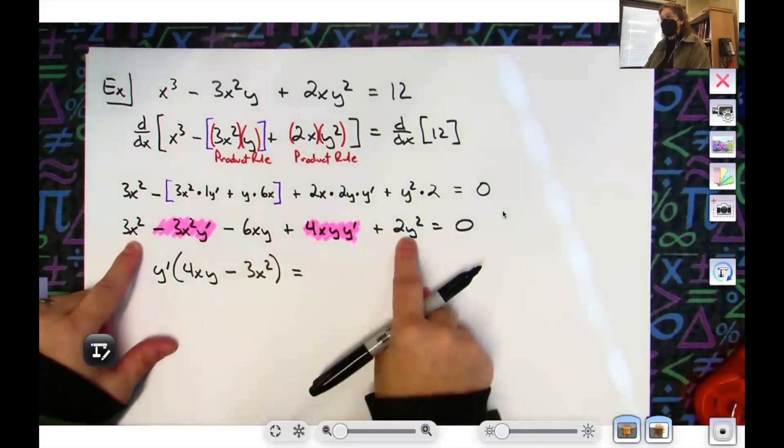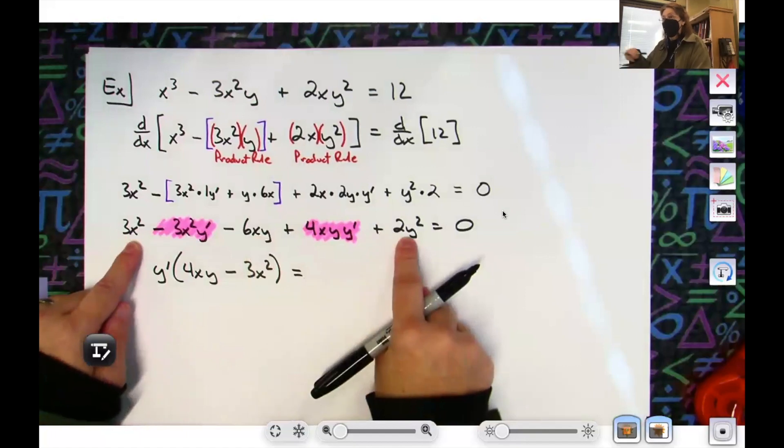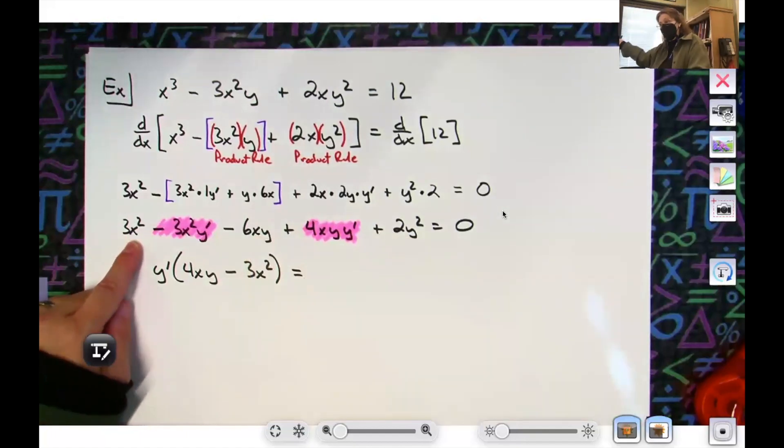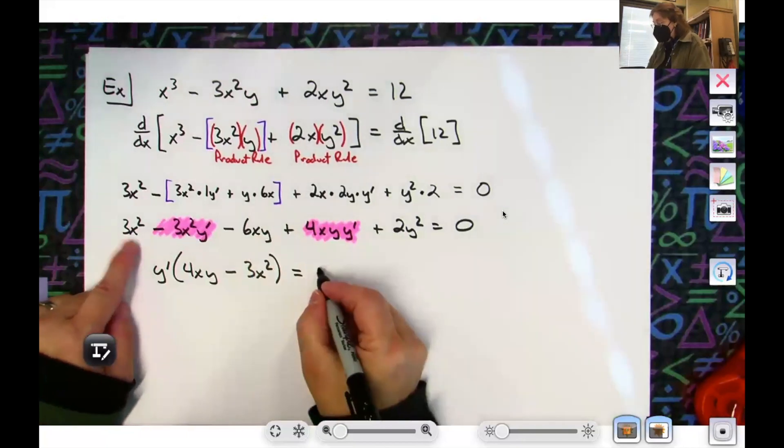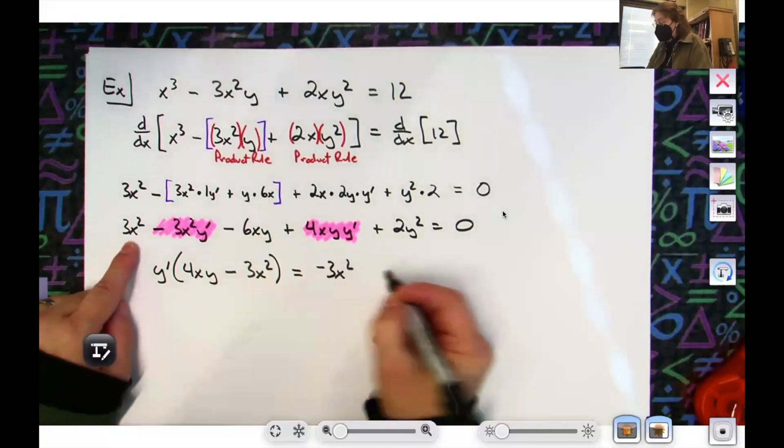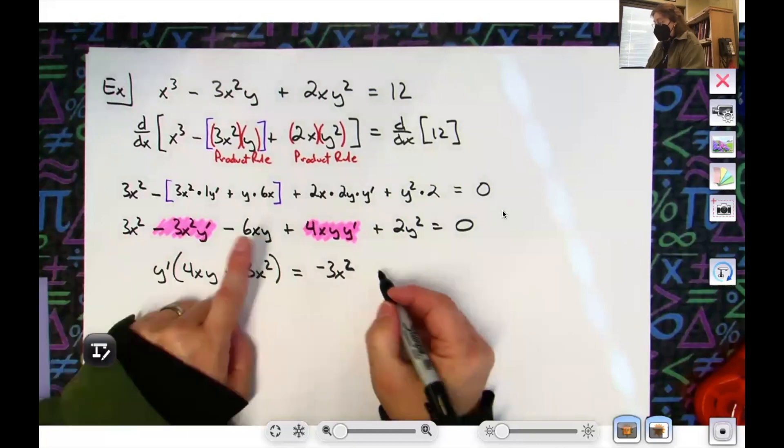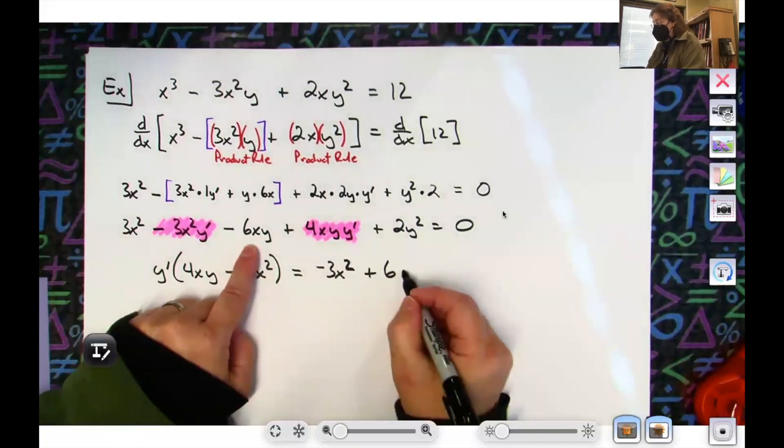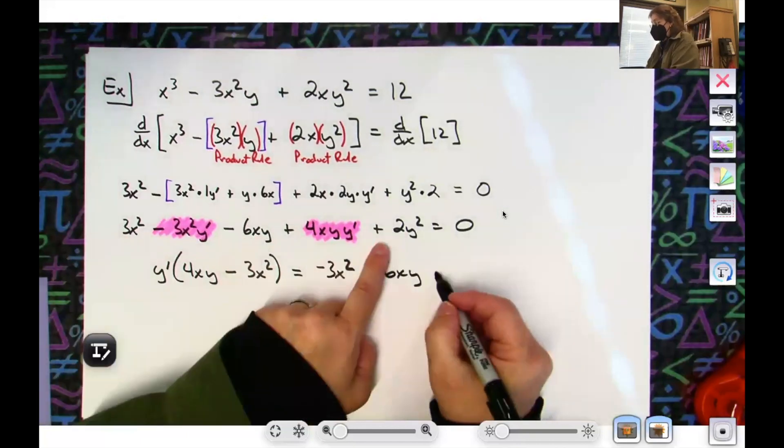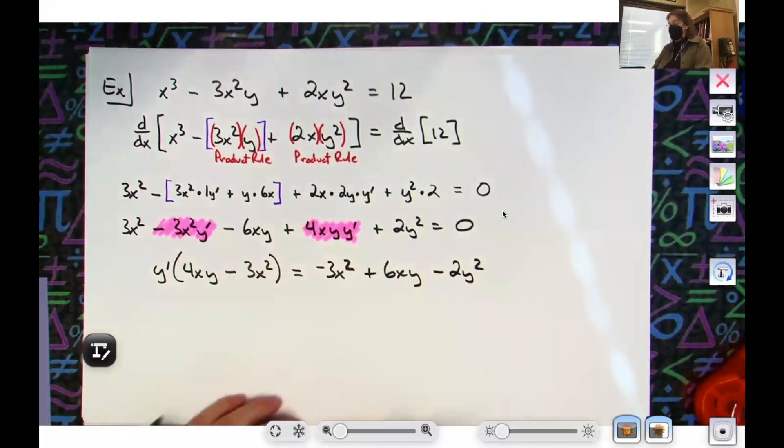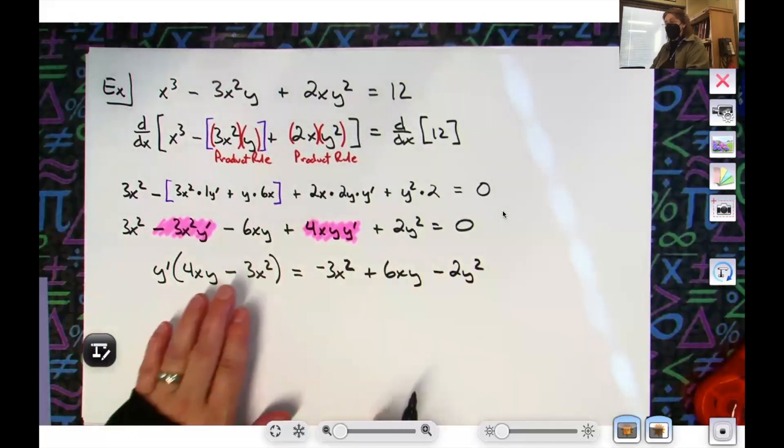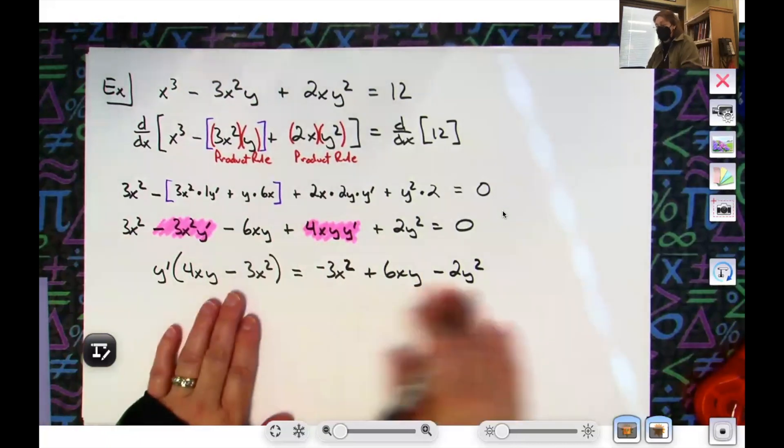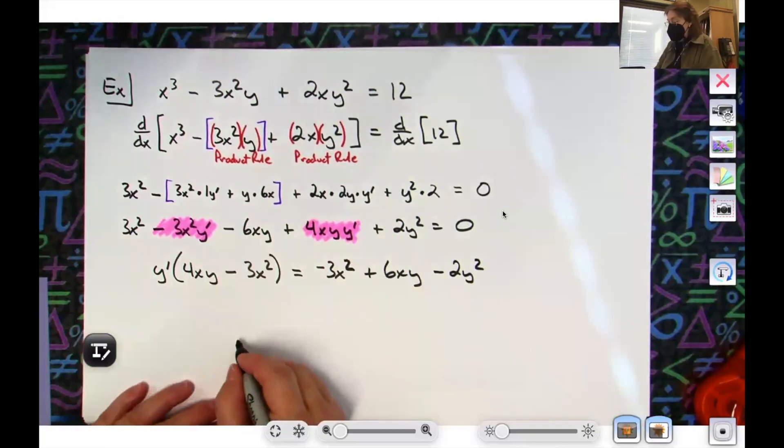Now all three of these I tend to keep them in the exact same order when I move them to the right hand side, so all I'm doing is going to change the sign. So I'm going to have a -3x², I'm going to have a +6xy, I'm going to have a -2y².